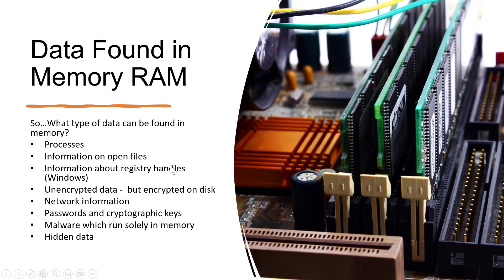If you don't know what memory or RAM is — this is what RAM looks like. Newer RAM sticks are smaller than this, but this one is from a desktop machine. The RAM is connected to the motherboard, and as we said, it is one of the key locations that the CPU can access.